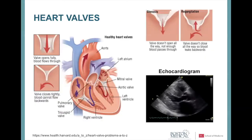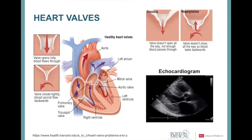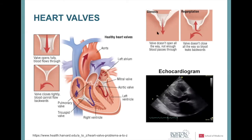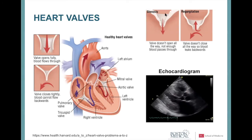The four heart valves — two on the right side and two on the left — separate the chambers from each other and from the great blood vessels. On the right: the tricuspid and pulmonic valves. On the left: the mitral and aortic valves. Normally, valves open to allow blood to flow freely and close so blood doesn't go backwards. When valves are too tight, that's called stenosis, causing high pressures on the other side.